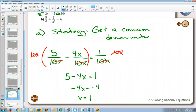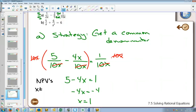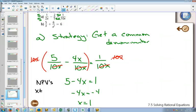We have to check if this is an extraneous root. The way that we check is we look at our original equation and see what are our non-permissible values. Is there anything that x can't equal? x can't equal 0, because if x is 0, then we'd be dividing by 0. And that's the only non-permissible value.